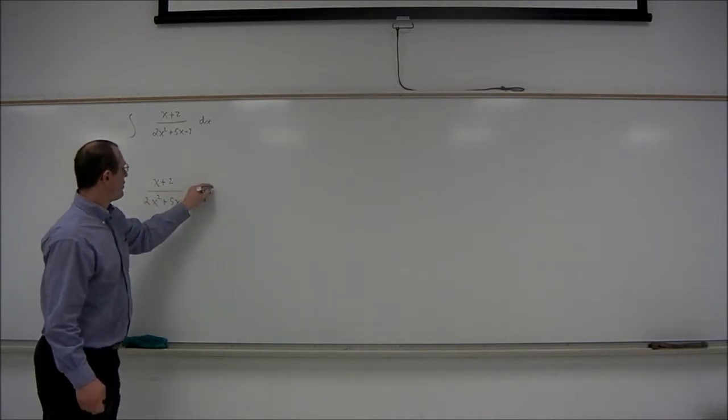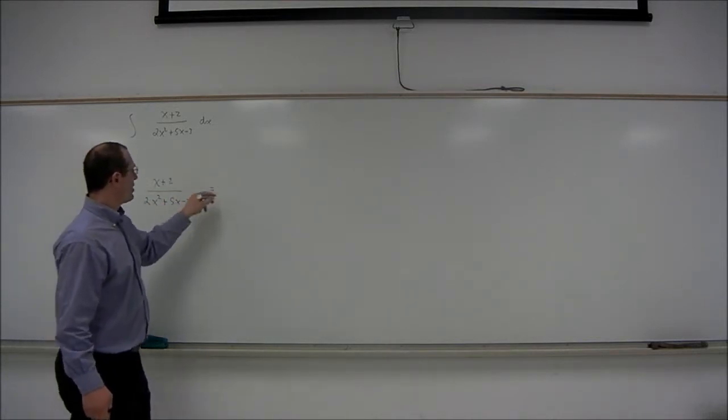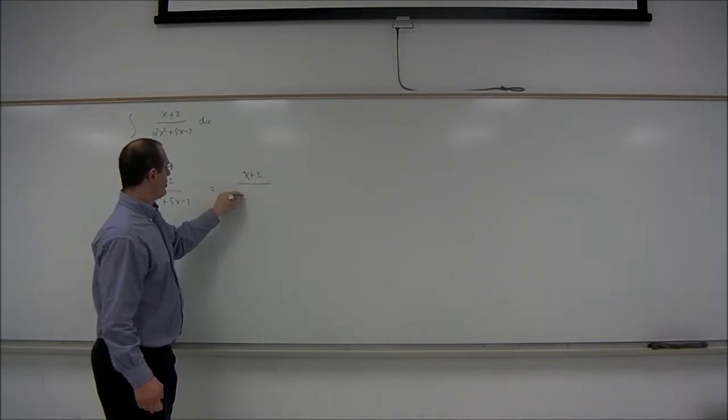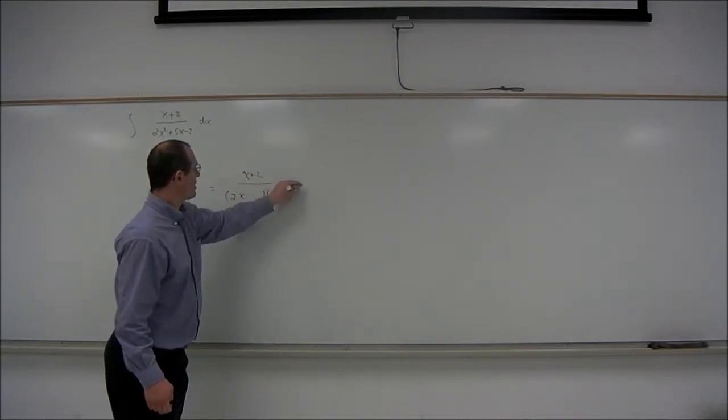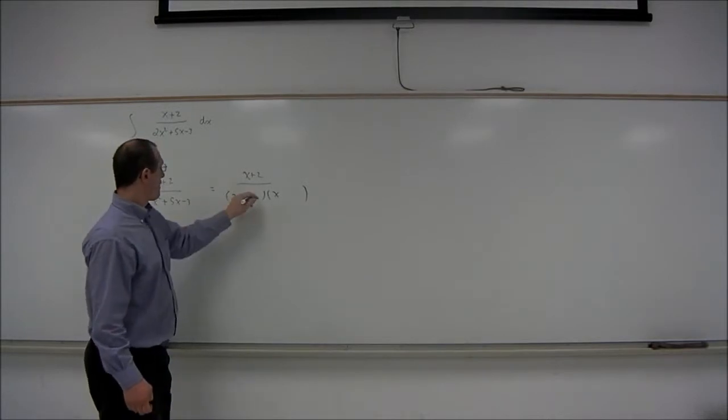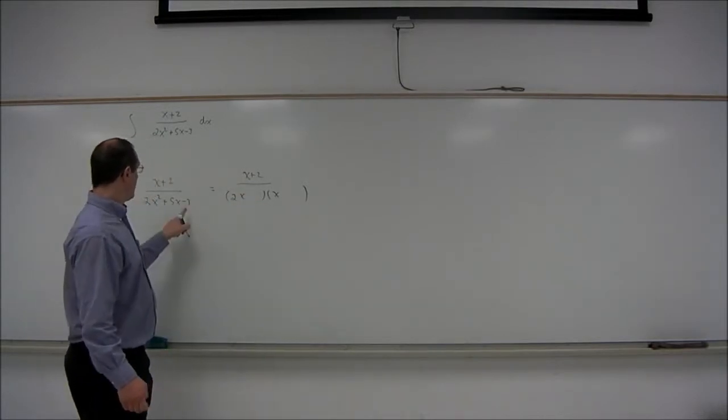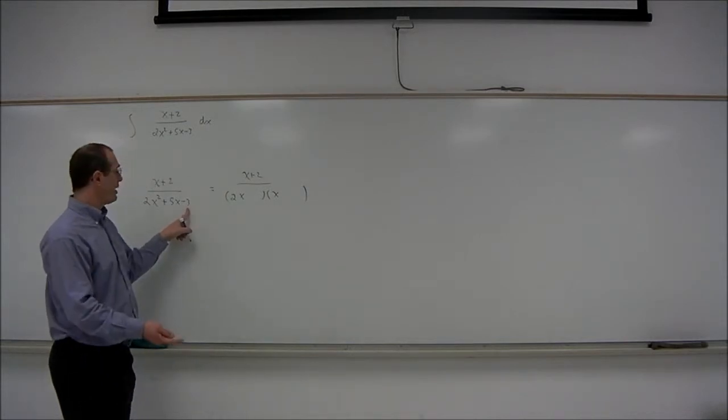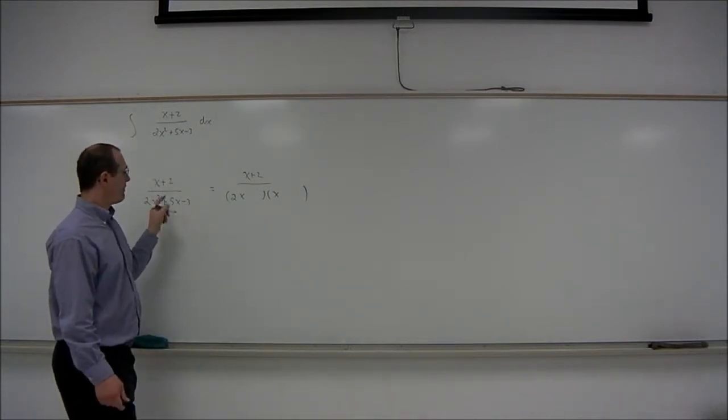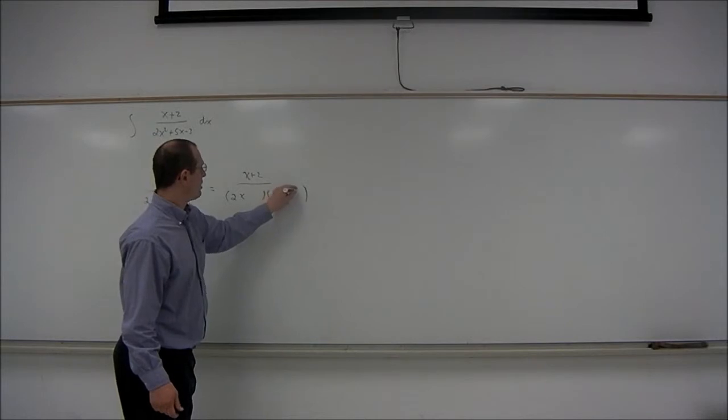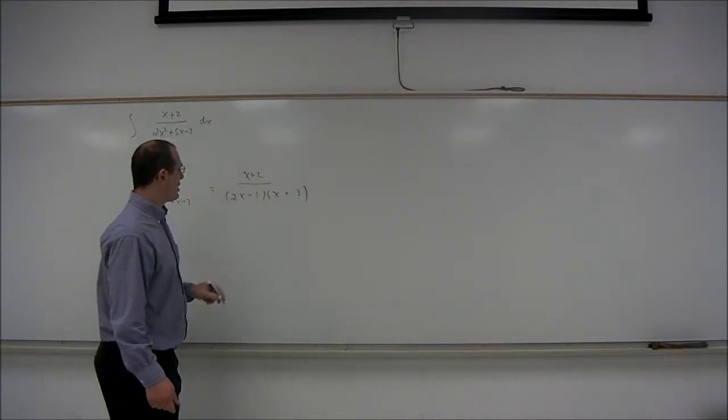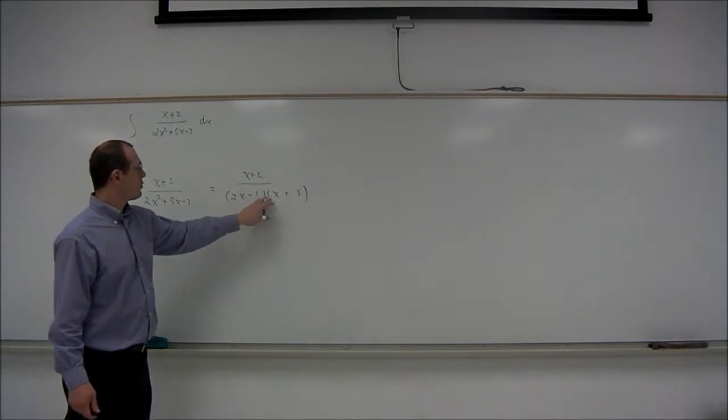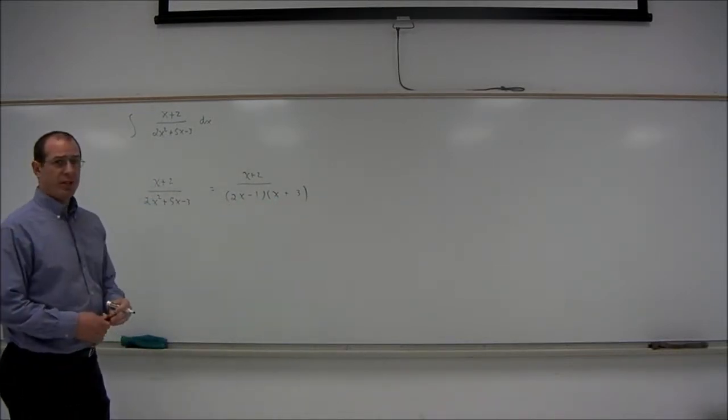So notice first that the denominator factors. So this is x plus 2 divided by 2x, let's see, two numbers that multiply together to give negative 3 will be negative 3 and 1, and we want to get 5x, so I think we should put plus 3 here and minus 1 there. So the denominator factors as 2x minus 1 times x plus 3.